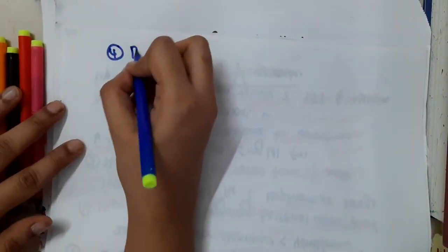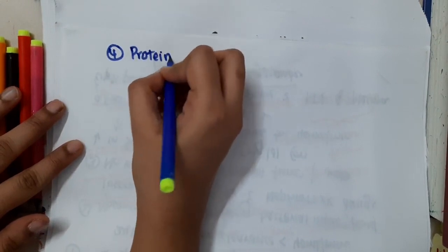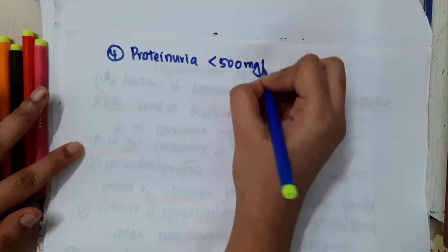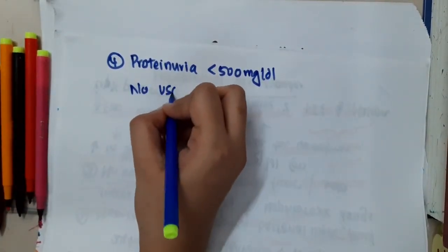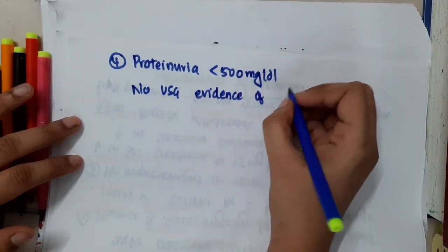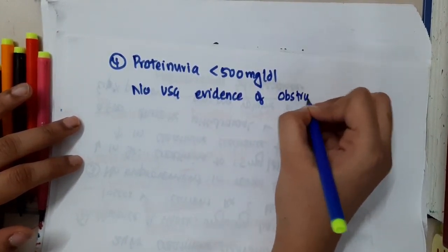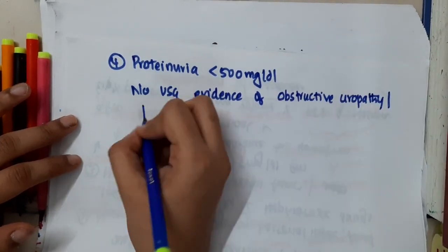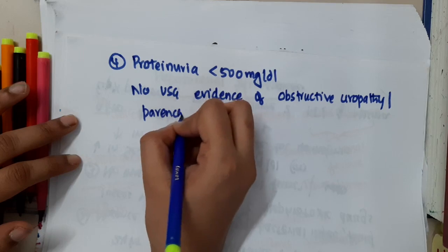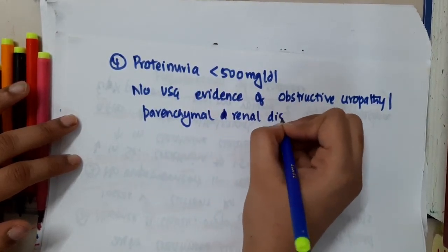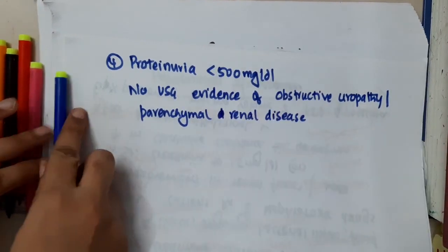Fourth major criteria: if the patient has proteinuria less than 500 mg per day, and there is no ultrasonographic evidence of obstructive uropathy or parenchymal renal disease. All these together form the major criteria.